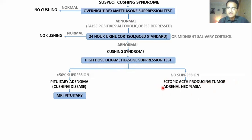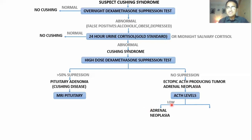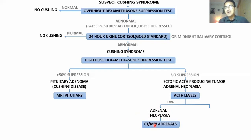To differentiate between these two, you go for an ACTH level test. When ACTH levels are low, it means this is adrenal neoplasia, because the adrenal neoplasia is directly producing cortisol, and that excess cortisol suppresses the pituitary to stop secreting ACTH. To diagnose adrenal neoplasia, you go for CT or MRI of the adrenal glands.